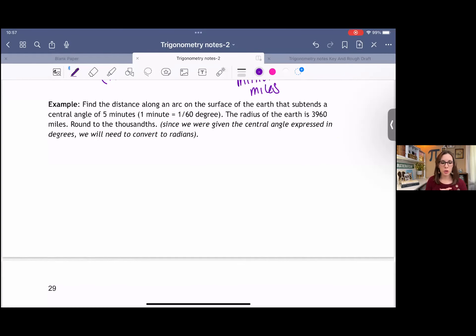This example is very similar, but we start with degrees instead. So we're going to have to convert this to radians before we can proceed since the formula states that theta has to be in radians. We're finding the distance along an arc on the surface of the earth that subtends a central angle of five minutes. One minute is equal to one over 60 degree. The radius of the earth is 3,960 miles. Round to the thousandth. And I want you all to go ahead and try it.